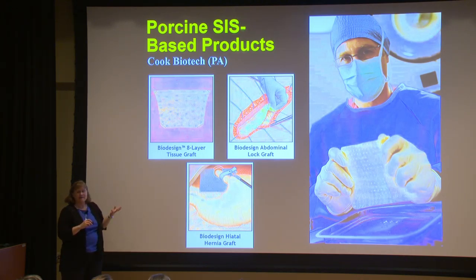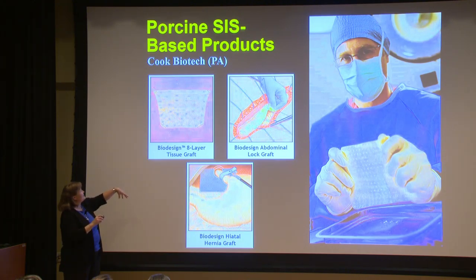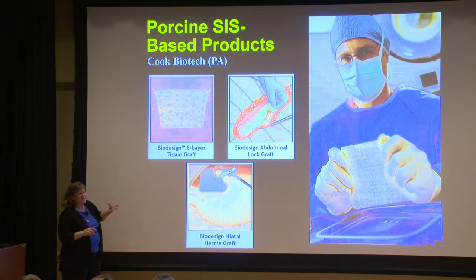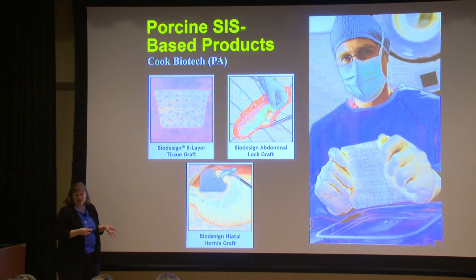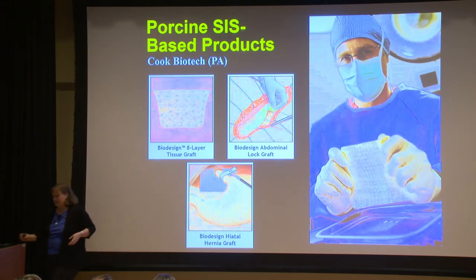Cook Biotech has a number of different products now. The same small intestinal submucosa can be outfitted into different types of tissue grafts — used for abdominal procedures, hernia grafting, and so forth. This is processed pig intestines and bladder tissue that provides growth factors, matrix proteins, and helps to heal injury sites.